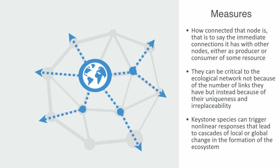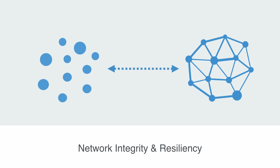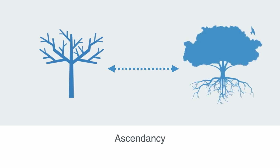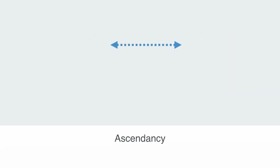Network analysis is a key tool for modeling the resilience of an ecosystem in terms of the integrity of its network of connections. Connectivity within networks can both enable robustness but also represent pathways for disaster spreading — it works both ways. On the beneficial side, the resiliency and robustness of a network can be correlated to the flow through the system as described by the theory of ascendancy, where ascendancy is defined as the level of functionality of the ecosystem's trophic network. One way of interpreting ascendancy is to regard it as the organizational structure of connections that enables resources to flow through the network — the magnitude of power flowing within the system toward particular ends.